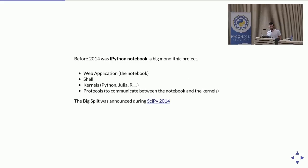They decided to create the Jupyter project. In 2014, during SciPy, they announced that would be the last version of the IPython Notebook, and from that point everything went under the name of the Jupyter project. The Jupyter Notebook, all the kernels — everything falls under Jupyter. The only thing that remains as IPython is the Python kernel and the associated protocols.